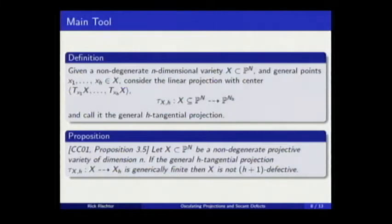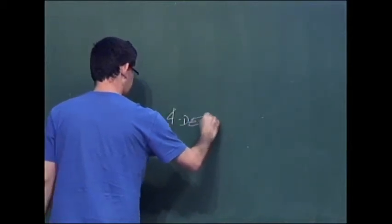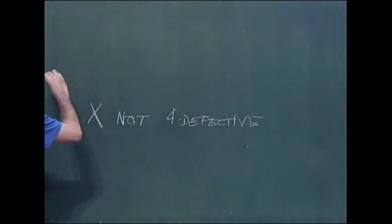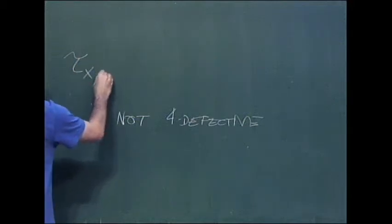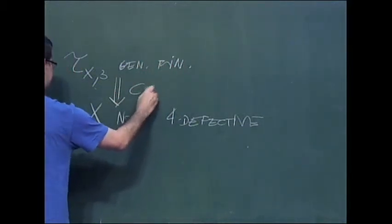But there is a problem to apply this theorem, because when h grows, you are considering more points, and these projections become more complicated to deal with. So it would be better to try to pass from this to another information with less points, or more simple rational map. For instance, suppose we want to prove that X is not, I don't know, 4-defective. So you have to consider the tangential projection from three points. You have to prove this is generically finite and apply Chiantini-Ciliberto.